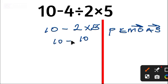10 minus 10 equals 0. The correct answer to this equation is 0.